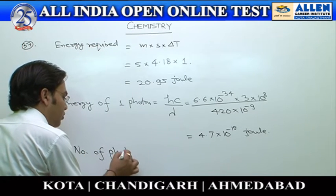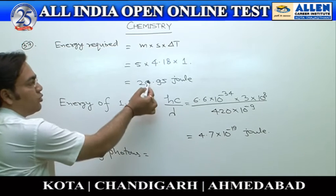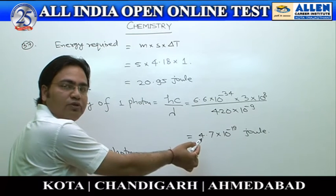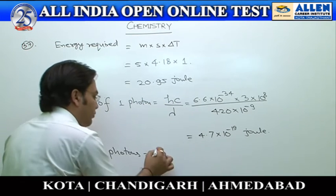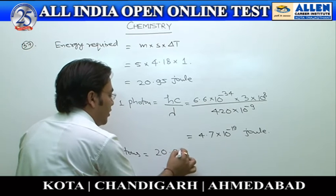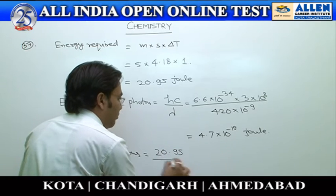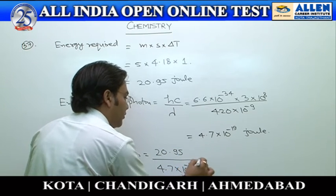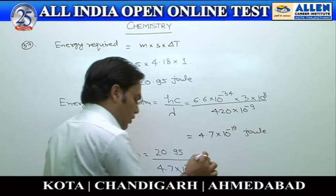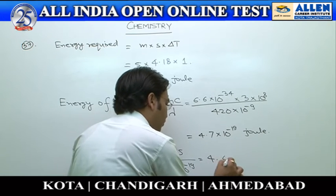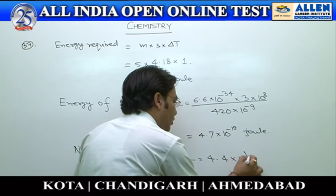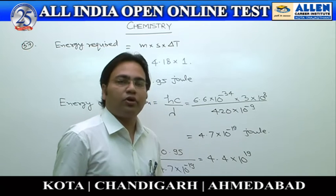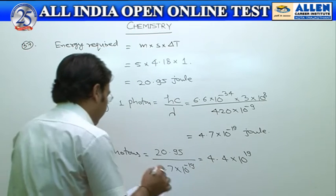Now we calculate the number of photons. The total energy required is 20.95 J, and the energy associated with one photon is 4.7×10⁻¹⁹ J. Dividing 20.95 by 4.7×10⁻¹⁹, after solving we get 4.4×10¹⁹ photons. This matches the first option, so answer 1 is correct.